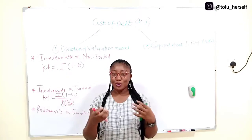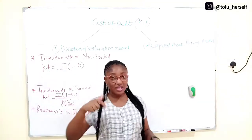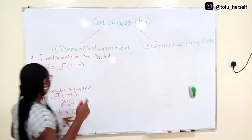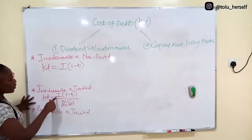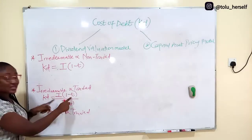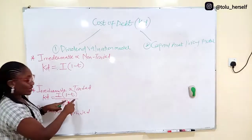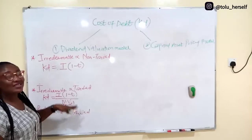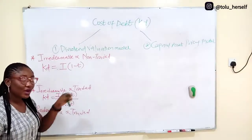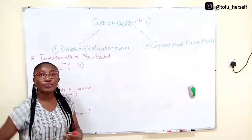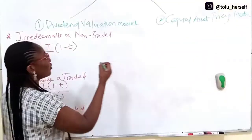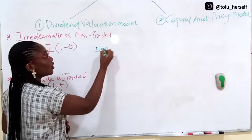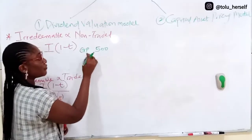So cost of debt, interest times one minus T. This means the interest must be post-tax. The whole post-tax issue is because interest is a tax deductible item. It is an item that is allowed before tax.